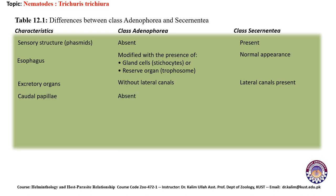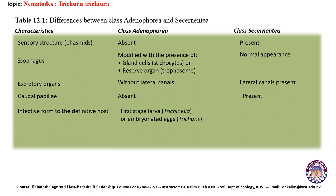Caudal papillae are absent in Class Adenophora but present in Class Secernentata. Regarding the infective form to the definitive host: in Adenophora, the first stage larvae — or embryonated eggs in the case of Trichinella and Trichuris — are infective, while in Secernentata, the third stage larvae or embryonated eggs are the infective form.